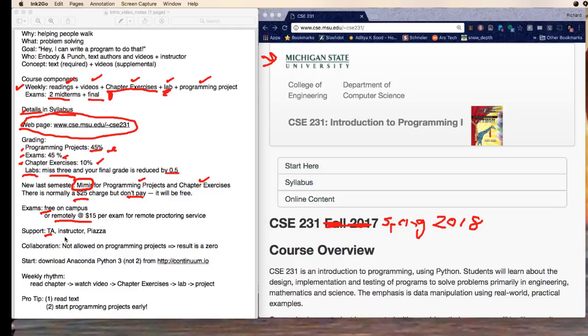In terms of support to help you out you will have a TA, there are the two instructors, there's Piazza and there's the help room. Collaboration is not allowed on programming projects, you'll get a zero on the project or depending upon the severity of it you may get a zero for the course. Where do you start? Download Anaconda, we want you to do this by Monday, that is the first day of classes. Notice that it's Python 3 not Python 2, you just got to watch out for that.